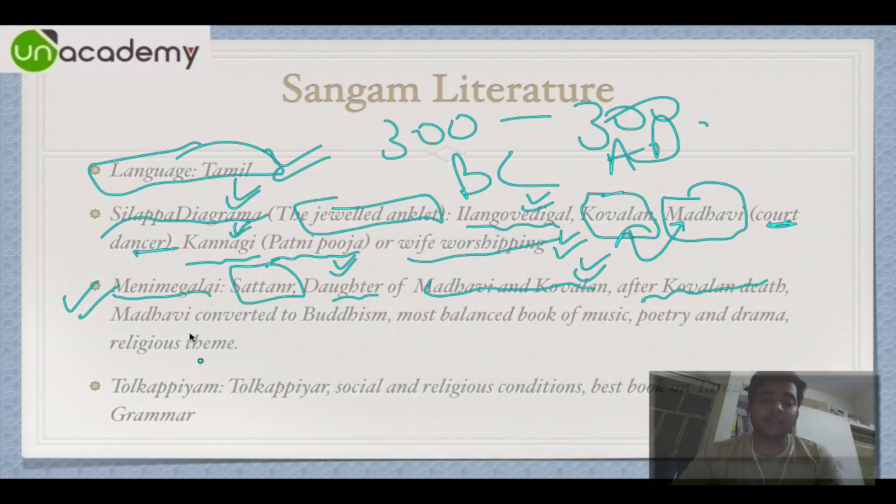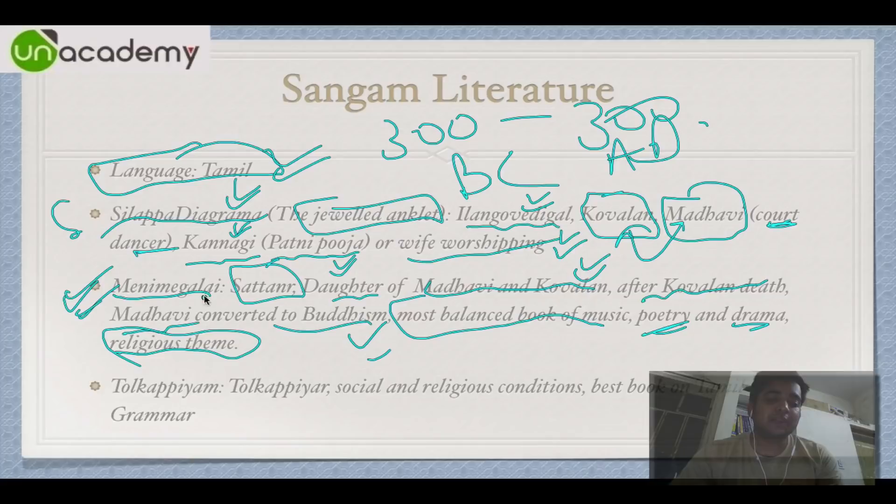Mani Mekalai is the daughter of Kovalan and Madhavi, written by Sattanar. After Kovalan's death, Madhavi converted to Buddhism. It is one of the most balanced books covering music, poetry, and drama, and includes religious themes. Finally, Tolkappiyam, written by Tolkappiyar, covers social and religious conditions and is the best book on Tamil grammar ever written.